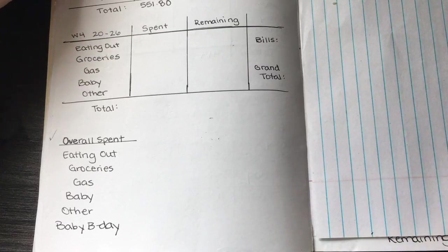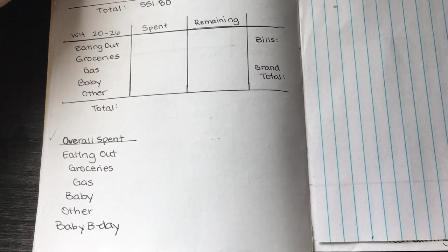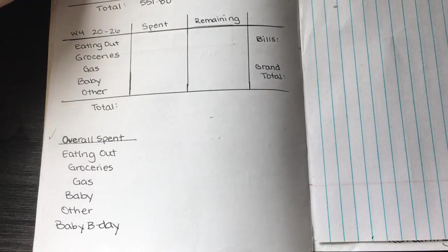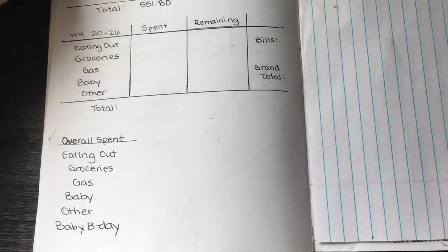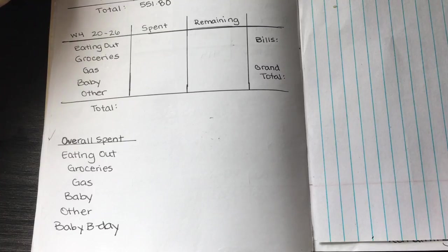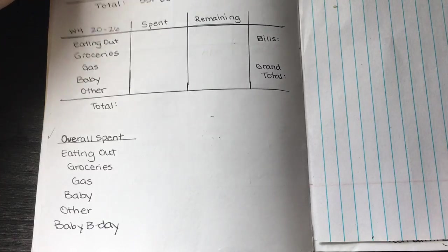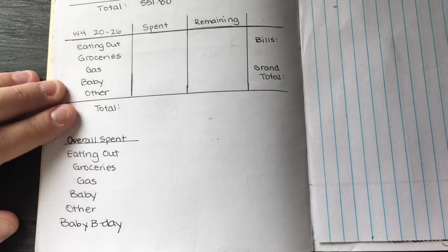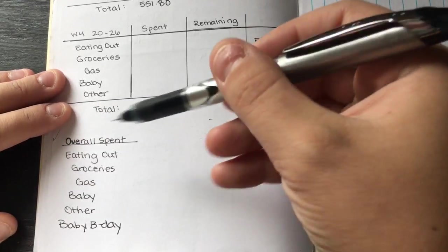But I'm back at it. I'm hopefully going to film quite a bit of videos while he's sleeping right now. Let's just get right into the video. This is my weekly expense tracker, week four from the 20th to the 26th. It's our last week, so you'll see how I did and then we'll go over my overall spending.